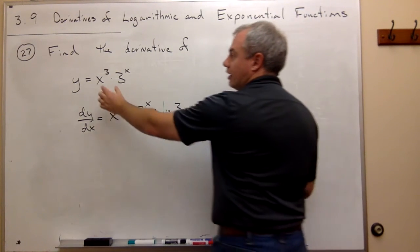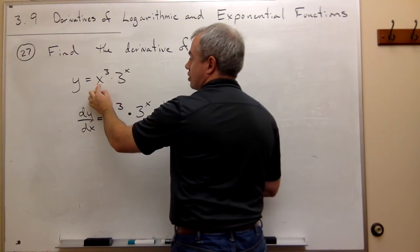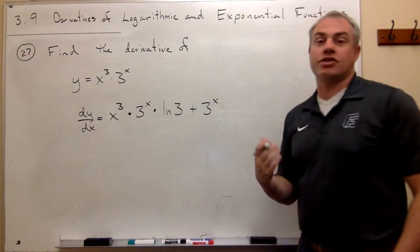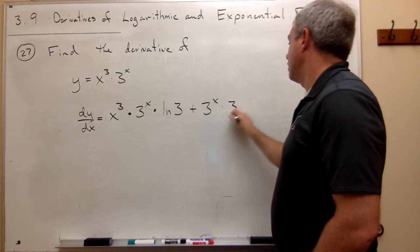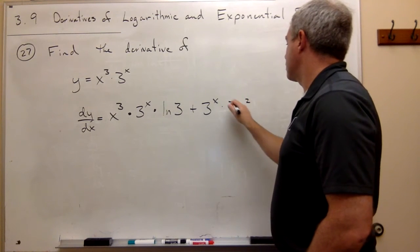Now this is just x cubed, so I can just use the power rule, and the derivative of x cubed is 3x squared.